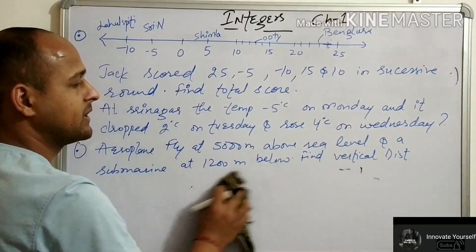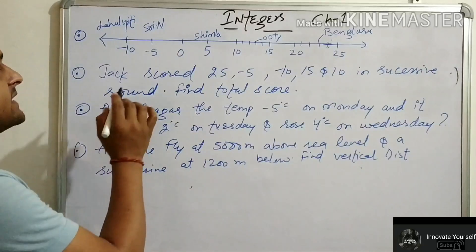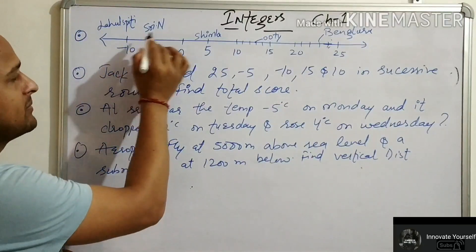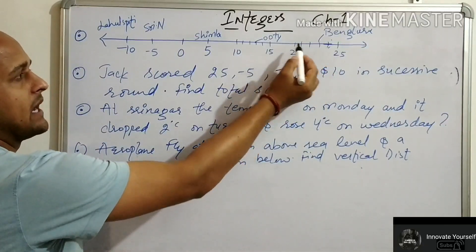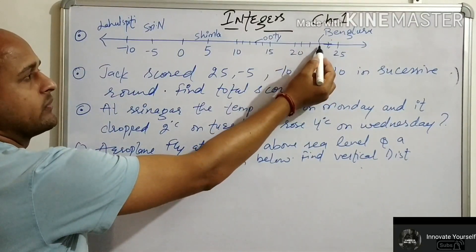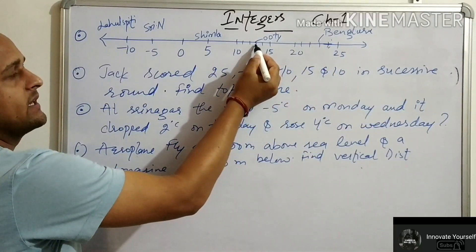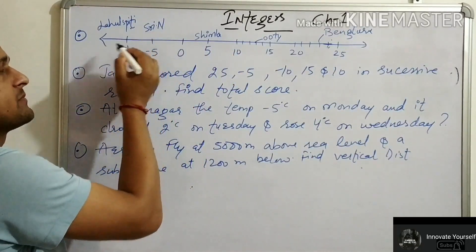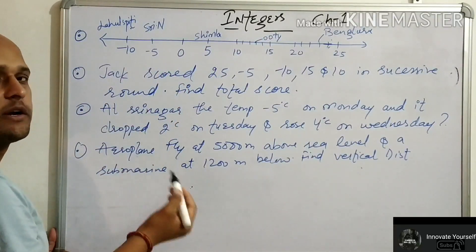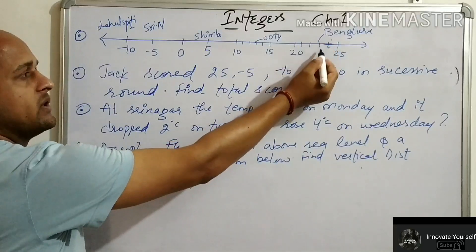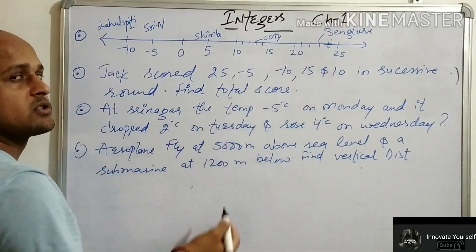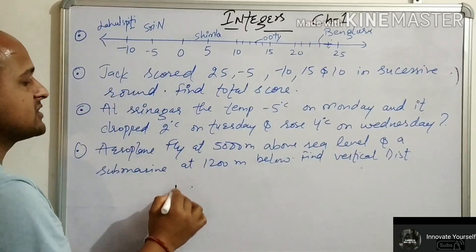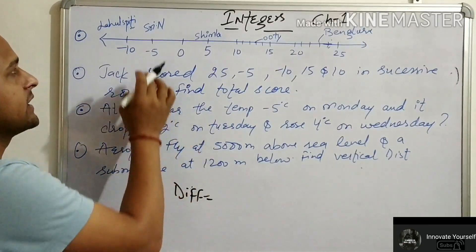Now we can see some basic questions to make the topic more clear. The first question from your exercise has a number line showing temperatures of different states. Bangalore is 23 degrees Celsius, Ooty is 13 degrees Celsius, Shimla is 5 degrees Celsius, Srinagar is minus 5 degrees Celsius, and Laos Piti is minus 10 degrees Celsius. The hottest place is Bangalore at 23°C and the coldest is Laos Piti at minus 10°C. Then we find the difference between Srinagar and Laos Piti.